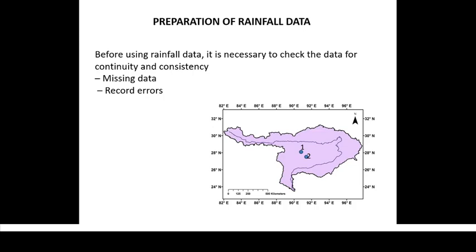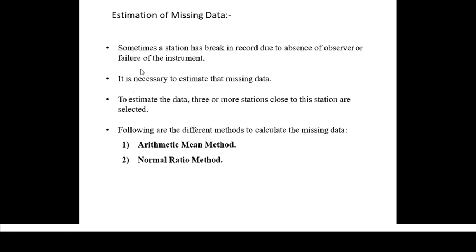We have to check for the continuity and consistency of the data before we analyze it further. In this particular lecture, we will talk only about the continuity of data — how to check it. Suppose we have a network of rain gauges, and in one of them we have data for every day, but on one particular day the person supposed to collect the rain data could not go there, or the instrument was not functioning. Therefore we have a missing data. How do we estimate this missing value? For that, we have two different methods: the arithmetic mean method and the normal ratio method.